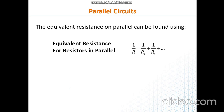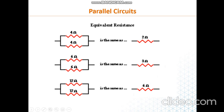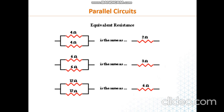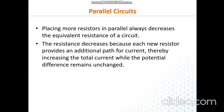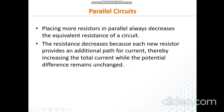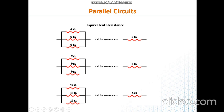The formula for equivalent resistance in parallel is: 1 over R-equivalent equals 1 over R1 plus 1 over R2 plus 1 over R3. For example, 4 ohms and 4 ohms in parallel gives 2 ohms; 6 and 6 in parallel gives 3 ohms; 12 and 12 gives 6 ohms. As you add more resistors in parallel, the total resistance decreases because the current divides more and more — there are more branches for the current to flow in.